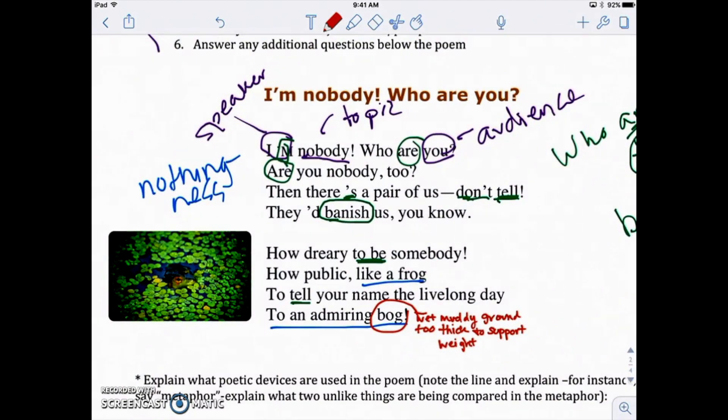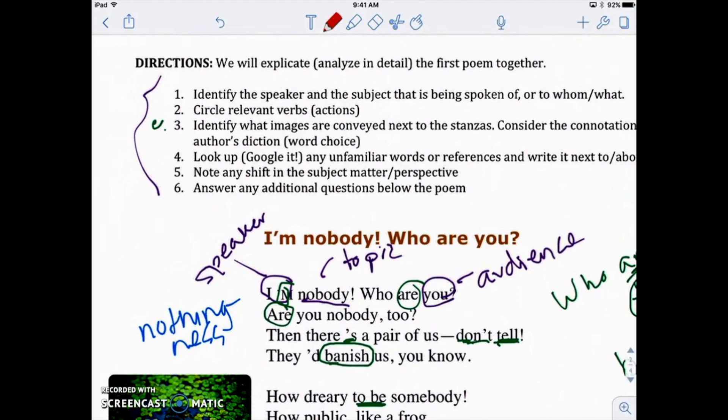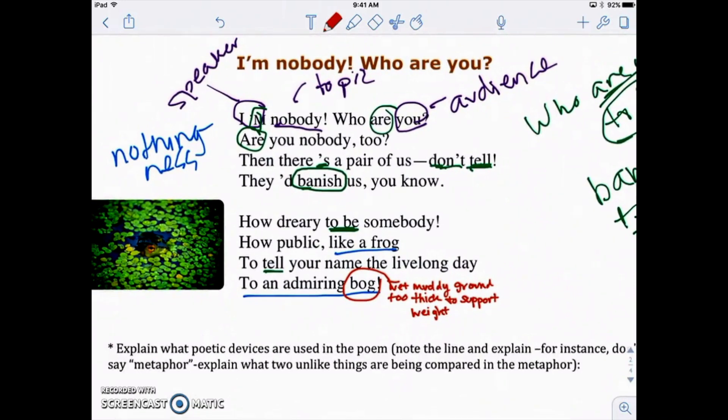Okay. So the last thing that we're supposed to do, and step, number five, I'm sorry, we're on step five. Step number five says note any shift in the subject matter or perspective. Let's read this one more time. I'm nobody. Who are you? Are you nobody too? Well, then there's a pair of us. Don't tell they'd banish us. You know, I think already right here, we've got a shift where it says, then there's a pair of us right here. Okay. There's a pair of us right here. So there's a shift right there. How dreary to be somebody, how public like a frog. So now we've shifted. There's a huge shift right here from nobody to now somebody, right?